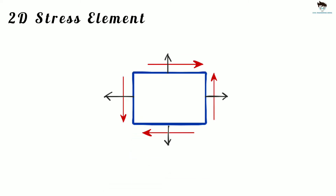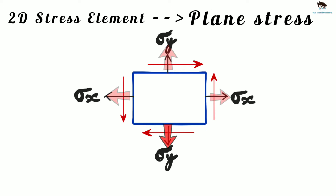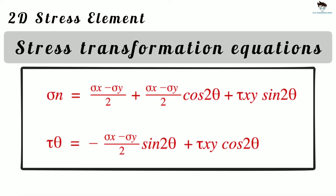Let's consider an example to understand the principal planes and principal stresses. Here we have a two-dimensional stress tensor corresponding to the state of plane stress. The normal stresses sigma x in the x-axis and sigma y in the y-axis are in tensile nature. Tau xy is the shearing stress, which always comes with the complementary stress.